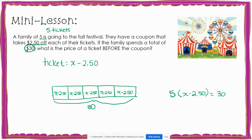From my tape diagram, I can see that each box represents the cost of one ticket. Since all of the boxes are equal and there are five boxes, I can divide them into five equal pieces, which means I will also divide 30 by 5. When I divide 30 by 5, I get 6. This means each box is $6, or that the family spent $6 on each ticket.